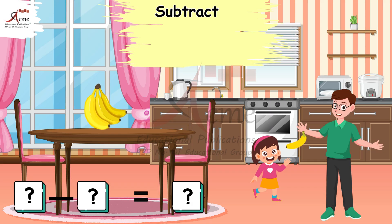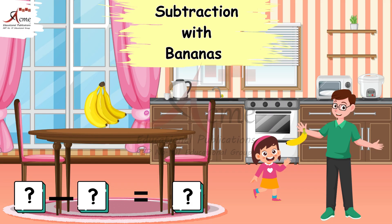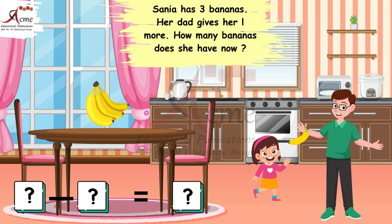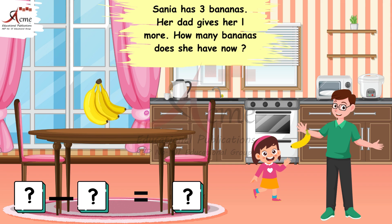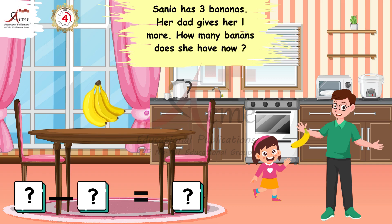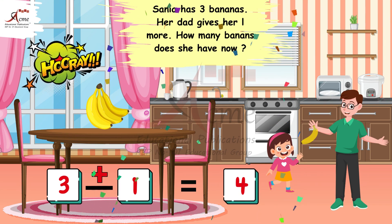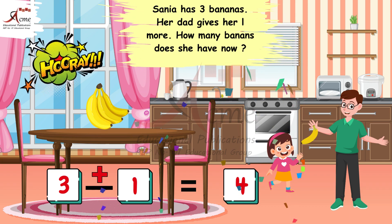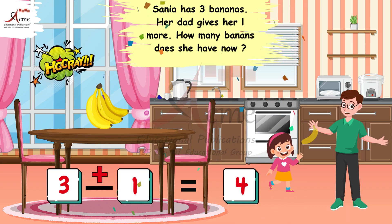Third question: Addition with bananas. Next, let's look at the third question. Sonia has 3 bananas. Her dad gives her 1 more. How many bananas does she have now? Can you count the bananas and add 1 to 3? Count the bananas — 3 bananas plus 1 banana equals 4 bananas. Correct. Sonia has 4 bananas now. Excellent.